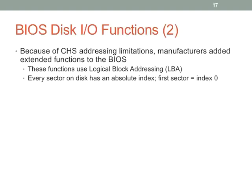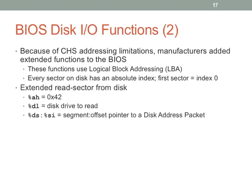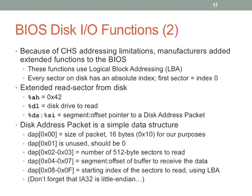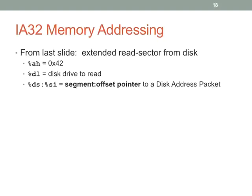To overcome CHS limitations, logical block addressing (LBA) was created, using a single index from zero to the maximum sector number. The extended read sector uses AH=0x42 with DS:SI pointing to a disk address packet — a data structure specifying the size of the packet, number of sectors to read, where to put the data, and where to start loading. These values can be large to support modern drives, so the disk address packet allows access to very large drives.